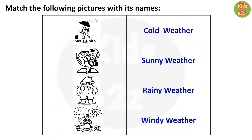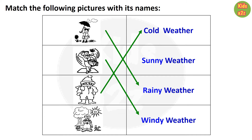Here kids need to match the following pictures with their names. The first picture shows a girl standing with an umbrella and rain falling — match it with rainy weather. The second picture matches with windy weather, the third with cold weather, and the last one with sunny weather.